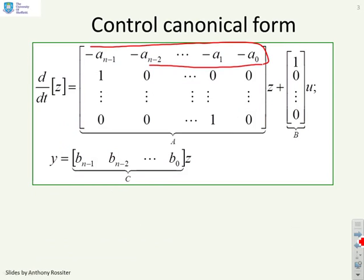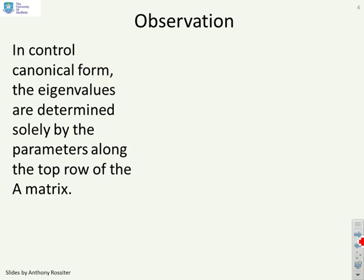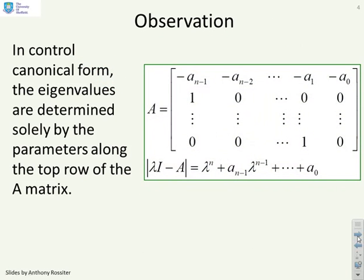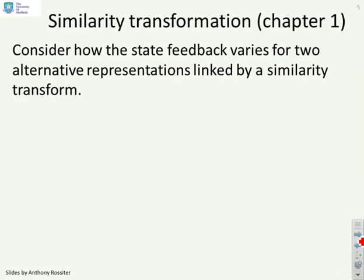As a reminder, control canonical form looks like this: the key parameters of the pole polynomial are in the top row, then ones in the lower diagonal and zeros elsewhere, with a one in the top row of B and zeros elsewhere. A transformation to control canonical form will only exist if the system is fully controllable, so make sure the system is fully controllable before continuing. The eigenvalues are determined solely by the parameters along the top row.